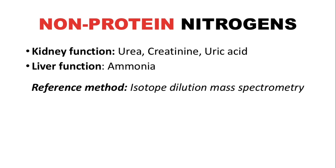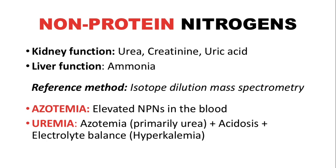The reference method for NPN measurement is isotope dilution mass spectrometry. Remember the terms azotemia and uremia. Azotemia is elevated NPNs in the blood, particularly urea, since urea is the most abundant NPN. Uremia is also elevated NPN, but it is accompanied by renal problems — acidosis and electrolyte imbalance, particularly hyperkalemia or increased potassium in the blood, brought about by kidney damage.